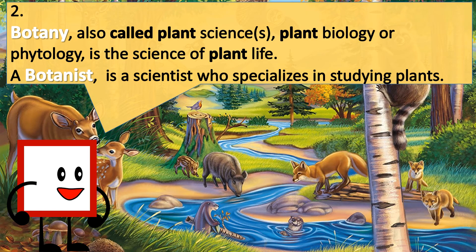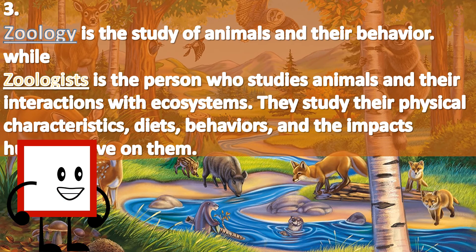Two: botany, also called plant science, plant biology or phytology, is the science of plant life. A botanist is a scientist who specializes in studying plants. Three: zoology is the study of animals and their behavior. A zoologist is the person who studies animals and their interactions with ecosystems. They study their physical characteristics, diets, behaviors and the impact humans have on them.